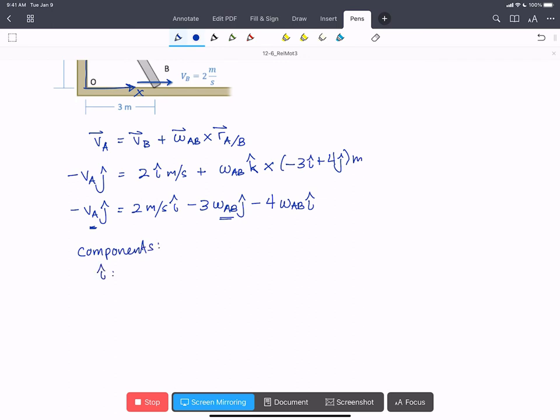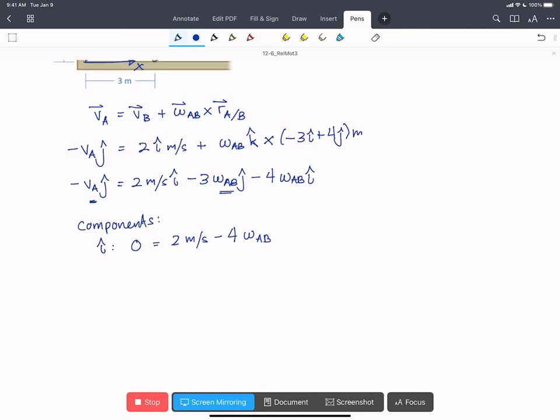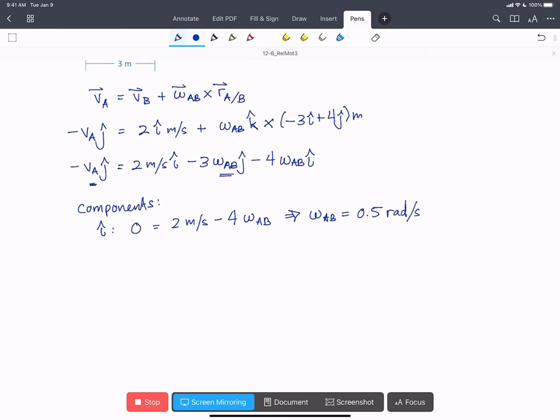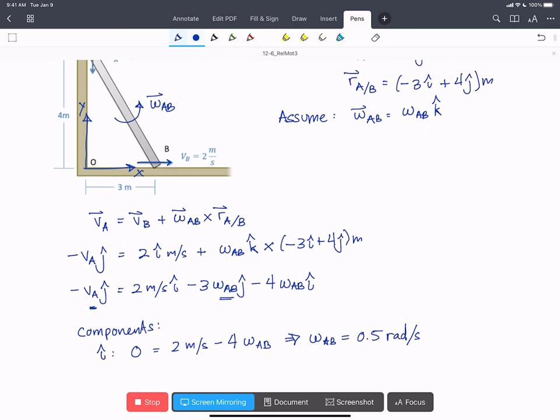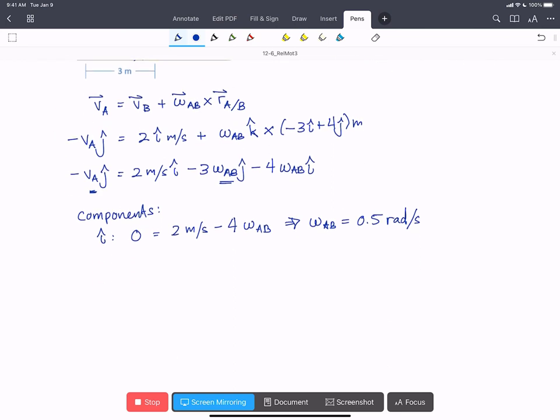Our i-hat components: zero on the left equals 2 meters per second minus 4 omega AB. This is going to give us a value of omega AB equals 0.5 rads per second. We got a positive value. That tells us that our original assumption for the direction was correct.